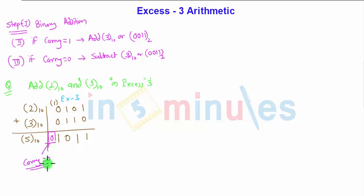So when carry is zero, what we need to do is subtract three from the answer. So let me subtract here, I'll put a minus, minus three, so 0011 minus three. So my answer is one minus one is zero, one minus one is zero, zero minus zero is zero, and it is one. So this is the final answer.